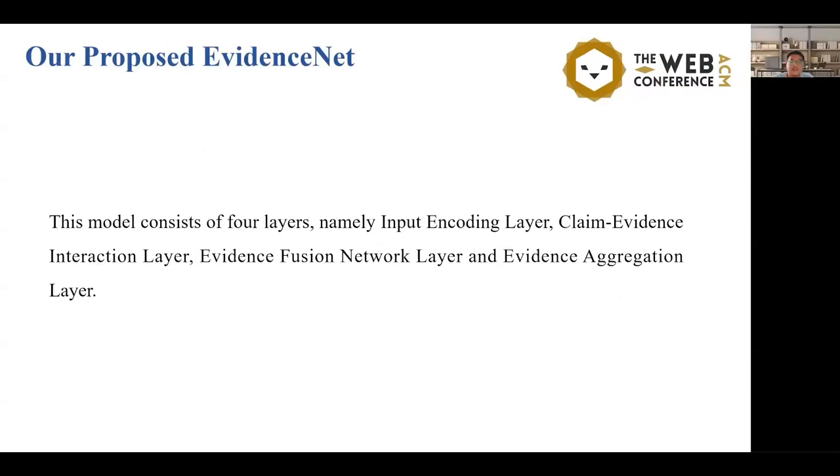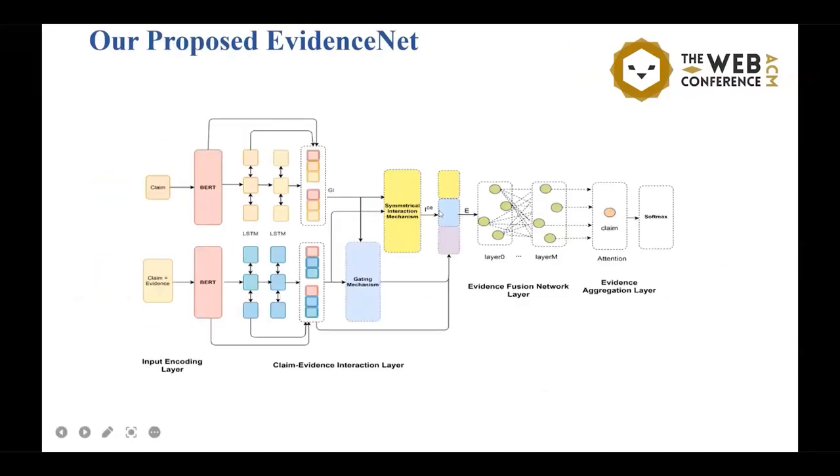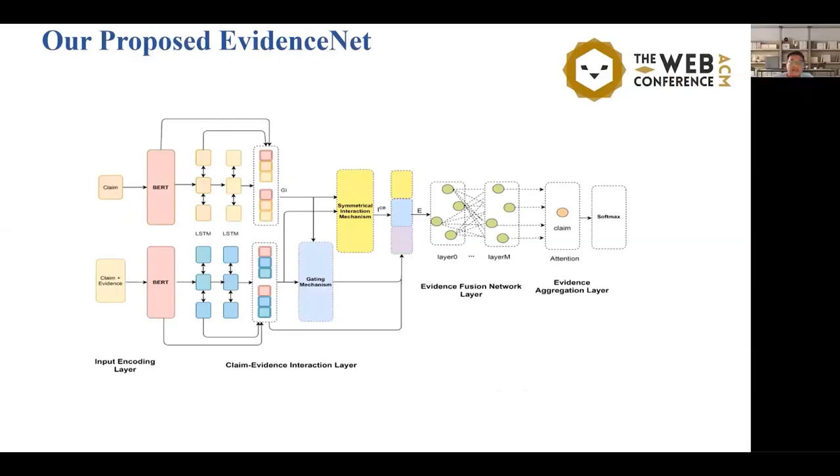Our proposed EvidenceNet. This model consists of four layers, namely the input encoding layer, claim and evidence interaction layer, evidence fusion network layer, and evidence aggregation layer. In this paper, we propose an evidence fusion network called EvidenceNet, which integrates several novel techniques to help tackle the three major problems that exist in the current fact verification methods. Firstly, it captures global information from claim and evidence input. Then, we remove the redundant information. Finally, it integrates the claim information into the evidence information and predicts the truthfulness of the claim.